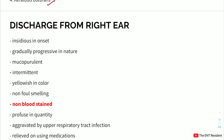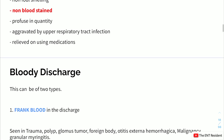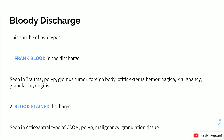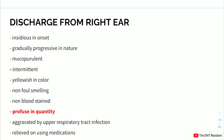The discharge was non-bloodstained. Frank blood from the ear is seen in trauma, polyp, glomus tumor, foreign body, otitis externa haemorrhagica, malignancy, or granular myringitis. Blood-stained discharge is most commonly seen in atticoantral CSOM, polyps, malignancies, and granulation tissue. Our patient's non-bloodstained discharge further supports tubo-tympanic CSOM.